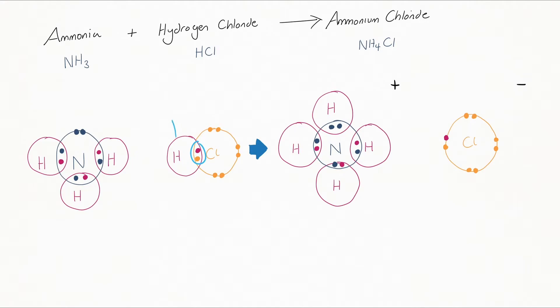...could move and react with the ammonia to form a dative covalent bond. It would do this by leaving both electrons attached to the chlorine atom. I've used different colours to denote where the electrons have come from. As you can see, for example, I've denoted that the hydrogen electrons are in red, the nitrogen electrons are in blue, and the chlorine electrons are in yellow.